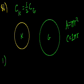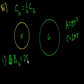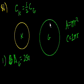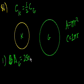Statement number 1 says the area of G is equal to 25π square meters. If I know the area of G, I can figure out the radius of G. If I know the radius of G, I can figure out the circumference of G. If I know the circumference of G, I can figure out the circumference of K. If I know the circumference of K, I can figure out the radius of K. And if I know the radius of K, I know the area of K. So this is sufficient.